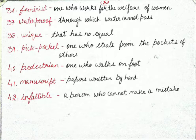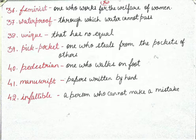Next is 'pedestrian' — one who walks on foot. Jo apne pairon se chale use pedestrian kehte hain. Next is 'manuscript' — papers written by hand. Jo papers haath se likhe jayen unhe manuscript kehte hain. Next is 'infallible' — a person who cannot make mistakes.